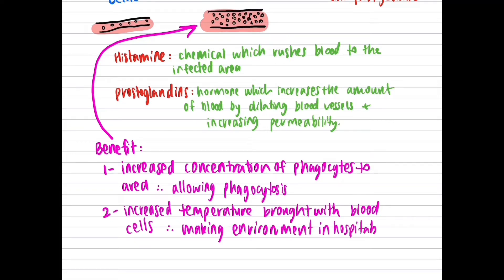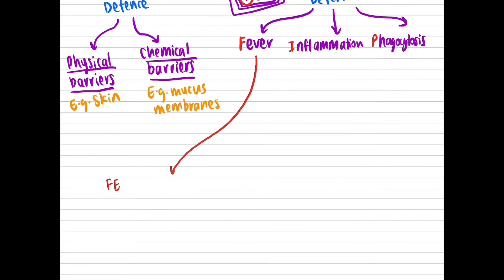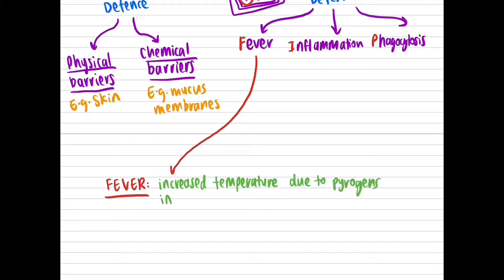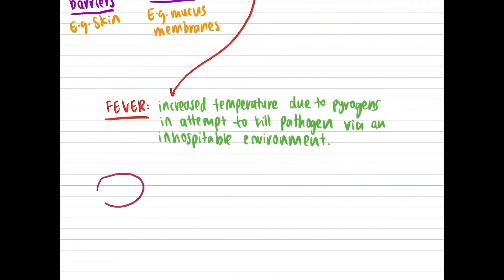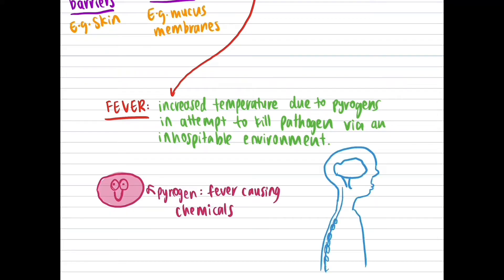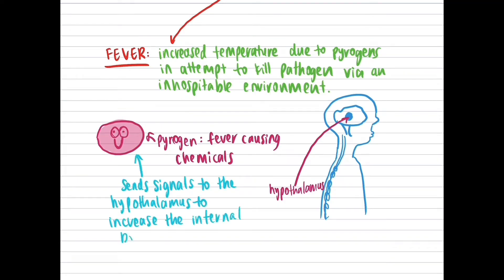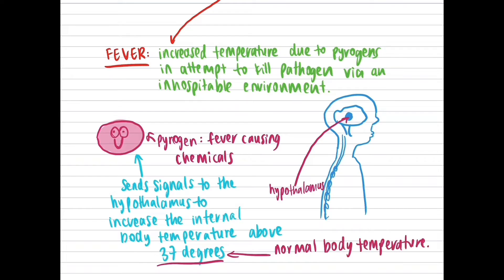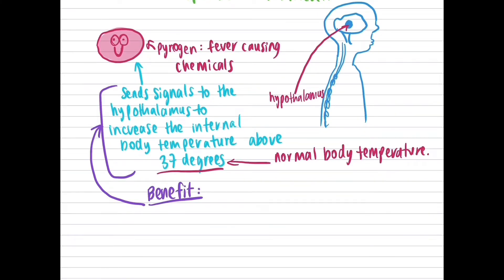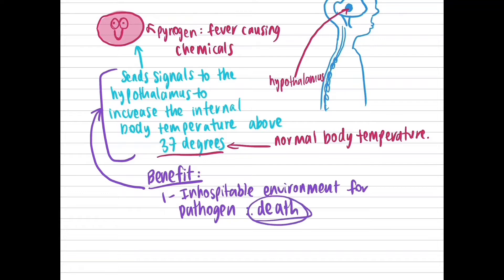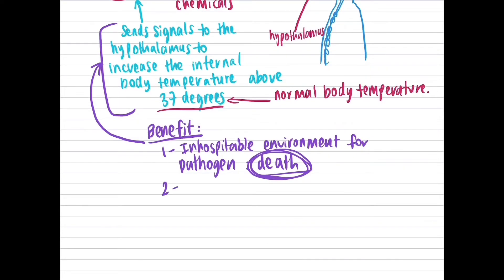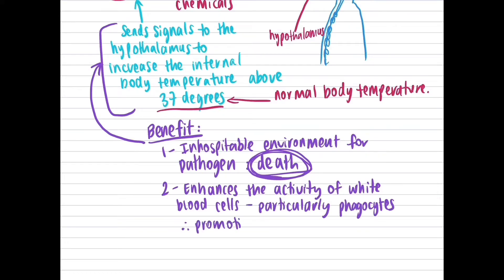This makes the environment inhospitable for the pathogen, hence killing it. For this same reason, the second line of defense is also responsible for fevers. Fevers are caused by pyrogens, which are fever-causing chemicals that act on the hypothalamus to increase the normal internal blood temperature above 37 degrees. As a result, living conditions become inhospitable for the pathogen, which operates at the same optimal temperature as a human, thus killing it. The activity of white blood cells is also enhanced at higher temperatures, promoting phagocytosis.